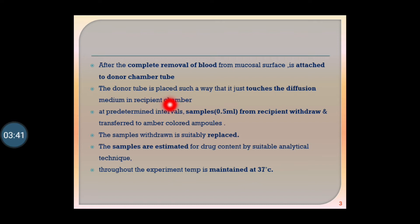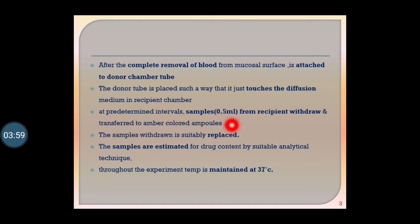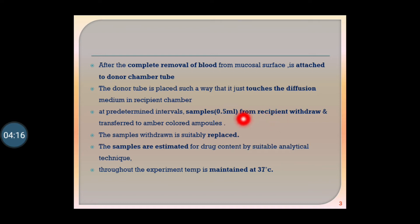The donor tube is placed so that it touches the surface of the diffusion media filled in the recipient chamber. At a predetermined interval, 0.5 ml samples are withdrawn from the recipient chamber and transferred to amber color ampoules for storage.